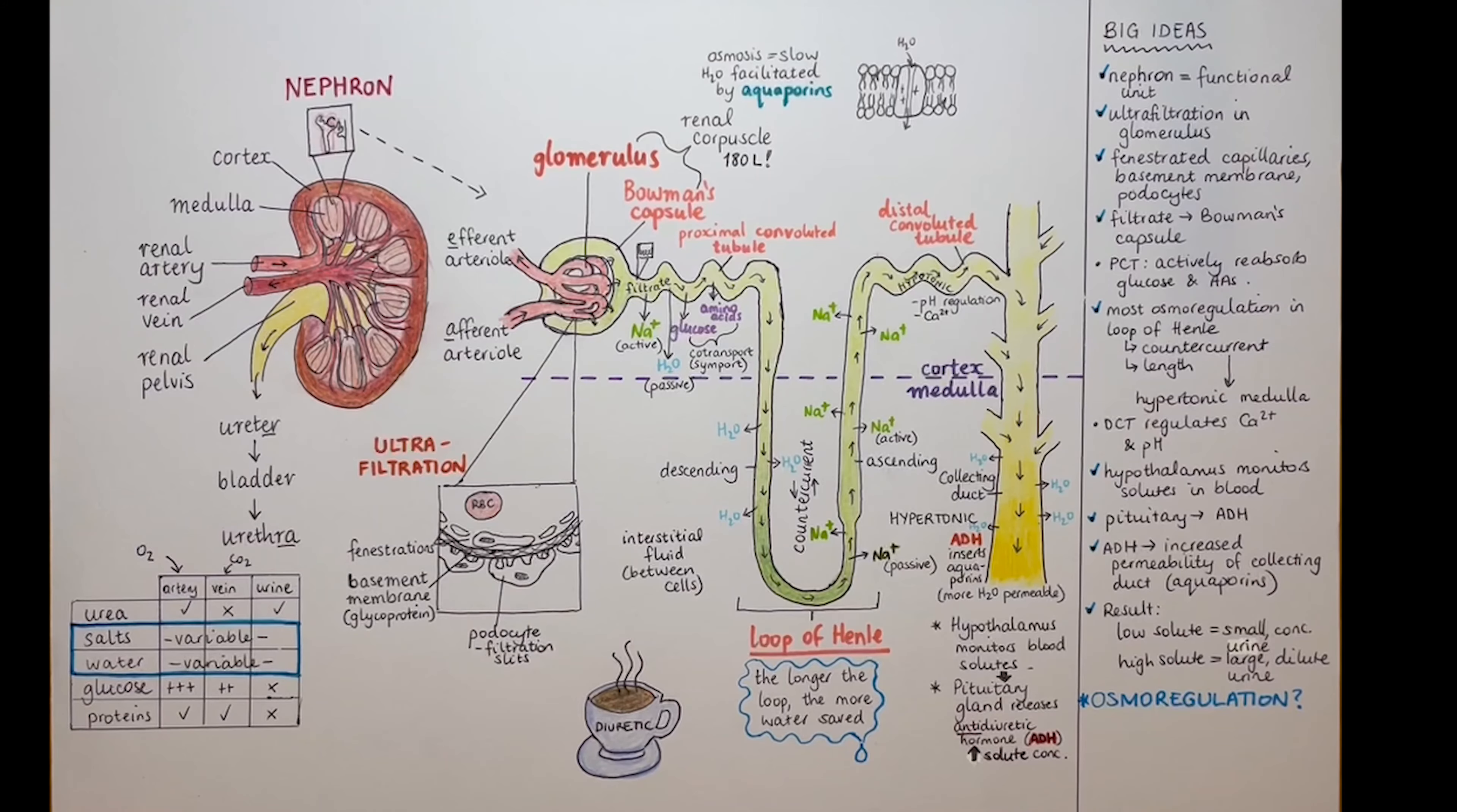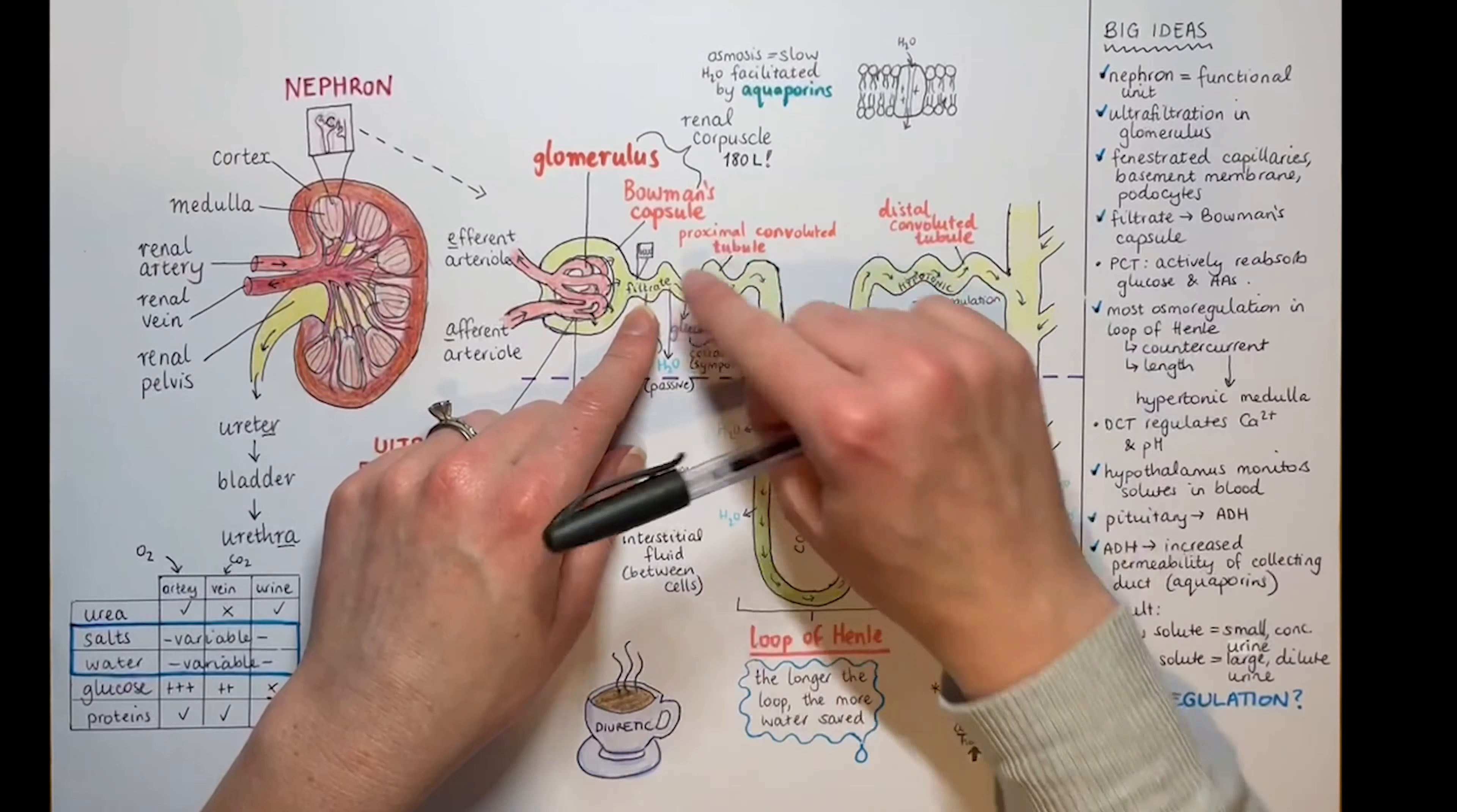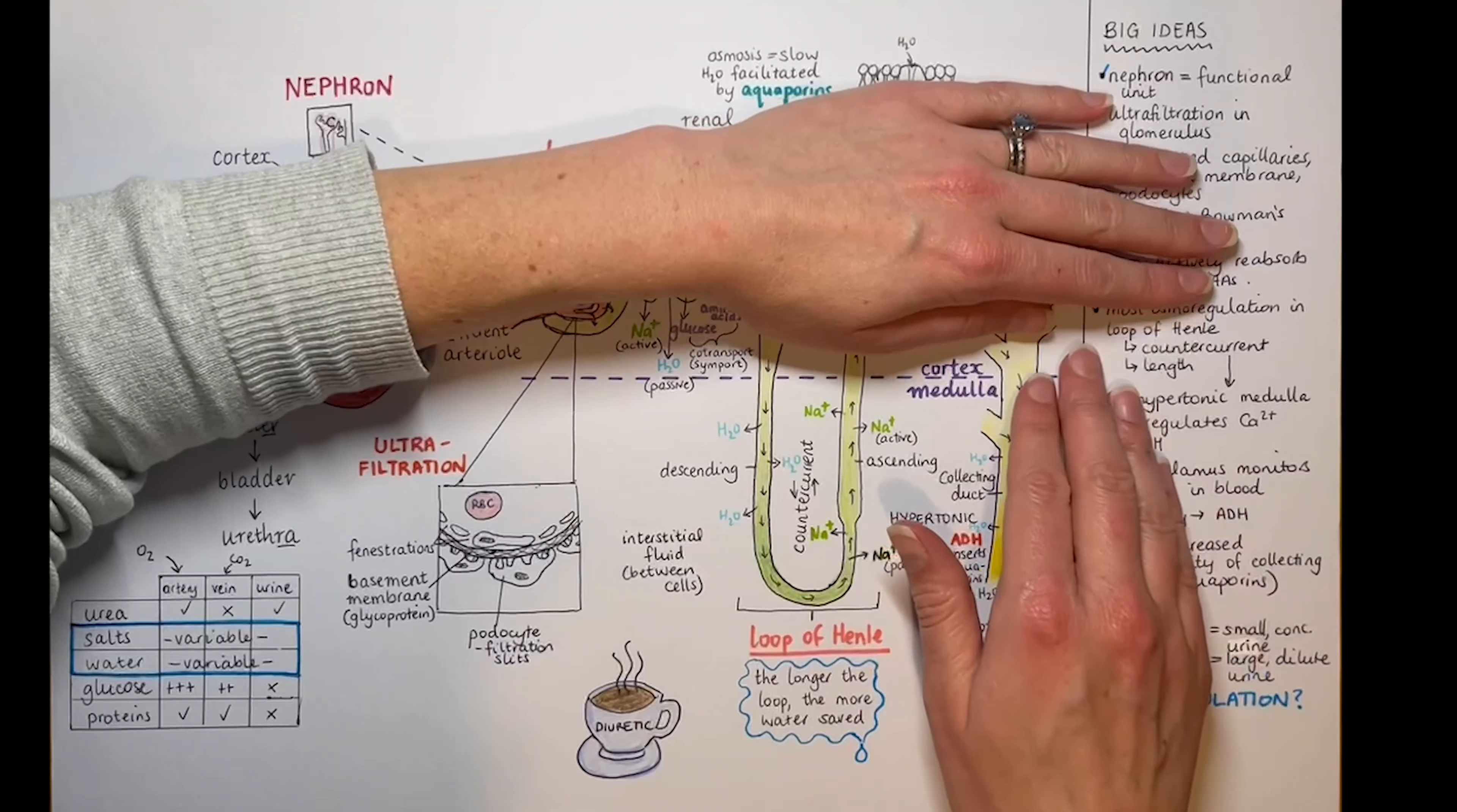An exam question could also ask about the composition of filtrate through different parts of the nephron, such as where glucose is present. It does enter the filtrate in the Bowman's capsule and then is present at the start of the proximal tubule, but nowhere else, because it's actively reabsorbed there.